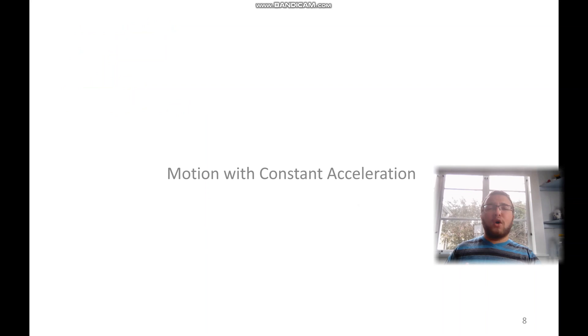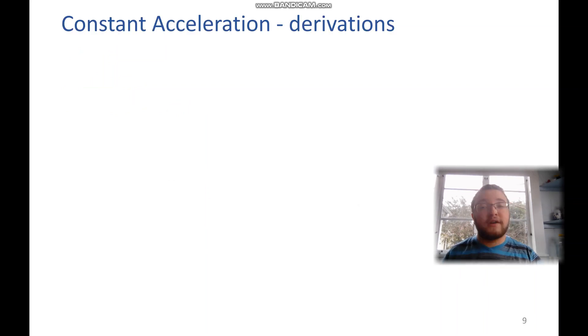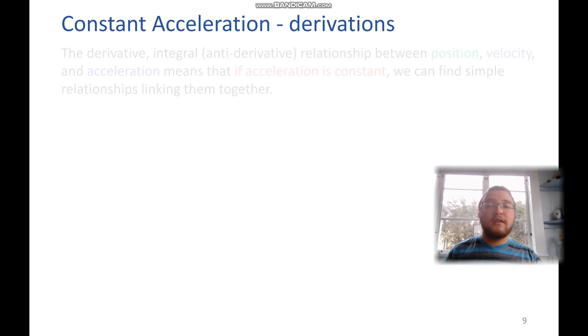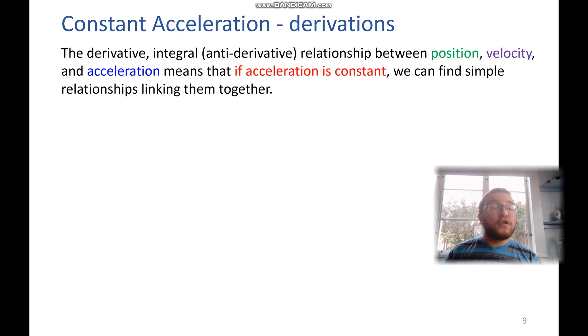So now we want to start to look at motion with constant acceleration. We actually have some kinematic equations that we use to describe this. So for those of us playing the calculus game, position, velocity, and acceleration all have a derivative-antiderivative relationship. So that means that if acceleration is constant, and only if it is constant,